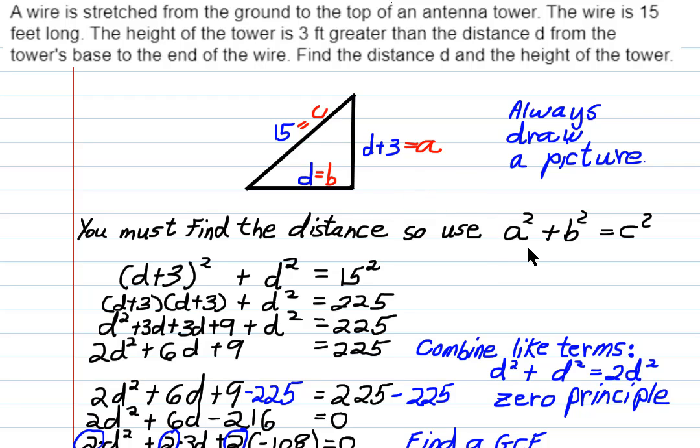So since our formula is a squared plus b squared equals c squared, since a is d plus 3, I put it in parentheses here and square it. And the side b is d, so I squared that. I added the two sides a and b, and then equals 15 squared. And now I'm ready to solve this problem.